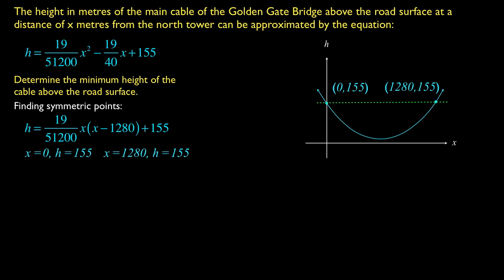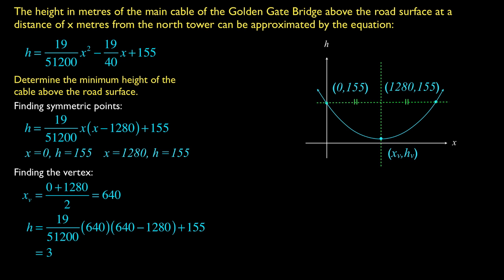Just as with the symmetry of x-intercepts, the symmetric points lie equidistant from the axis of symmetry. So in order to find the vertex, we just need to average the two x-coordinates of the two symmetric points. So we take the zero and the 1280, add them, divide by two, we get 640. And so to get the height value at 640, I can substitute either in the original standard form equation or the partially factored equation that I have, and I get that h is 3.